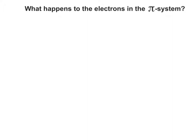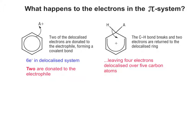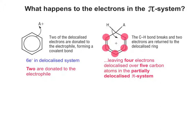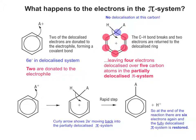It's worth pausing to think about what happens to the electrons in the pi system. We start with six electrons in the delocalised pi system, but two are donated to the electrophile. That leaves four electrons delocalised over five carbons in the partially delocalised pi system — I've highlighted those five carbons, and also the carbon where there's no delocalisation taking place at this point in the mechanism. The curly arrow then shows two electrons moving back into the partially delocalised pi system, so by the end of the mechanism there are six electrons again and the fully delocalised pi system has been restored.